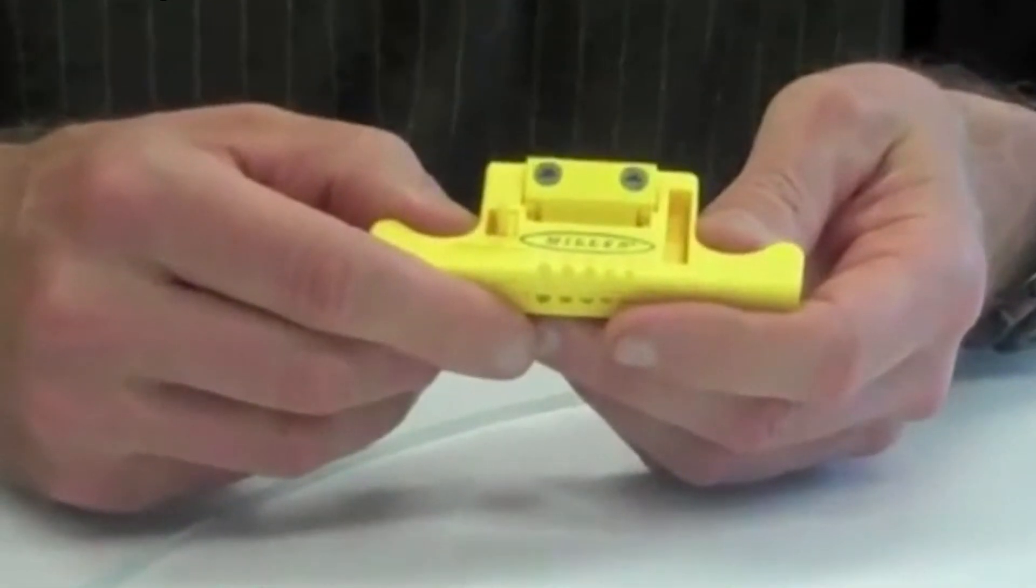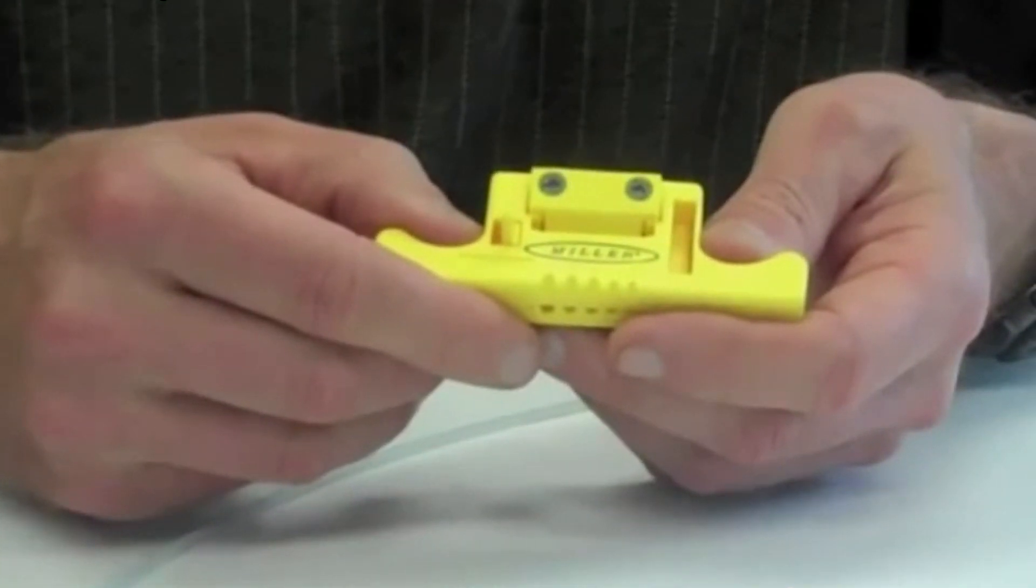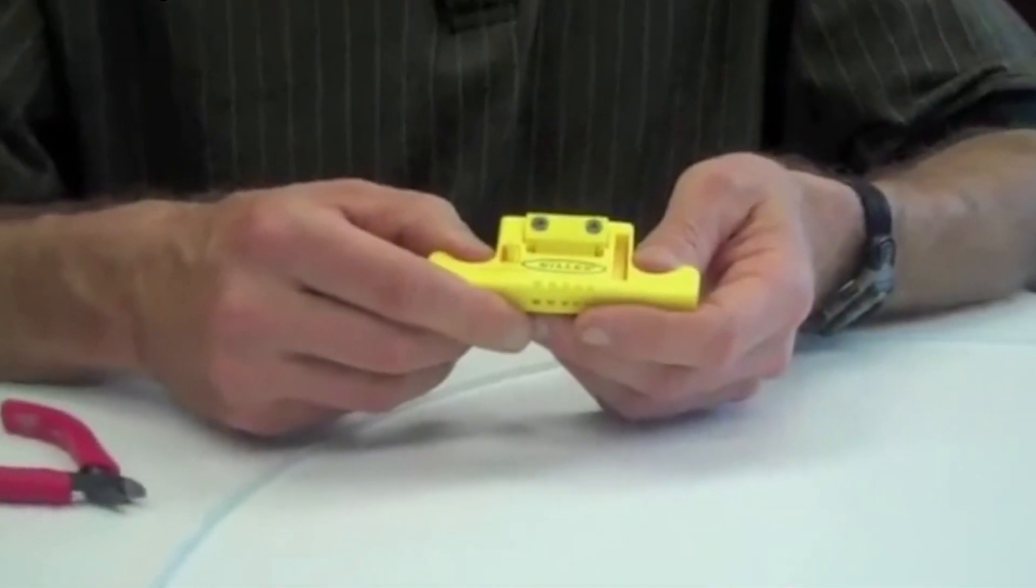Unlike most access tools, which slit the buffer tube to access the fiber, the MSAT5 accesses the fiber by shaving a window into the buffer, allowing for safe and easy access to the fiber.